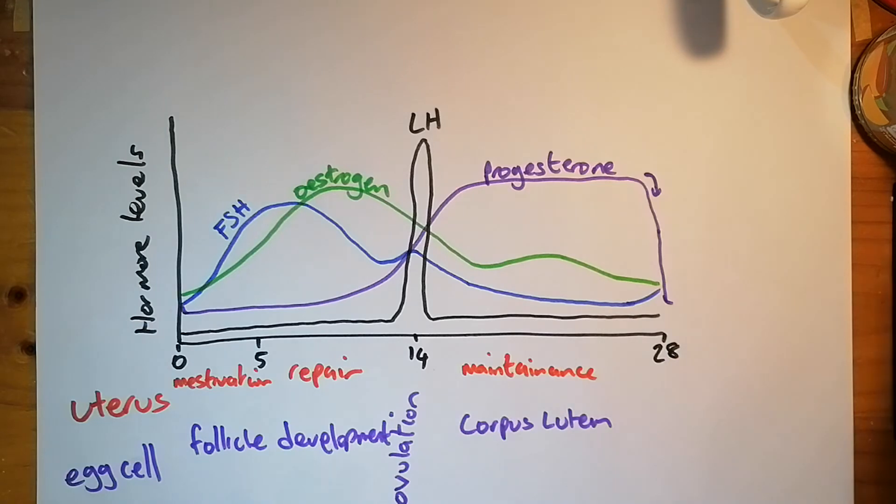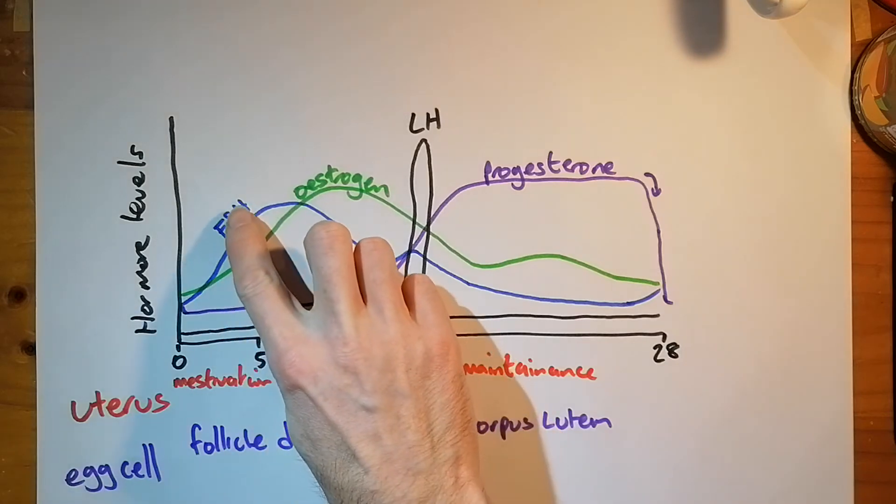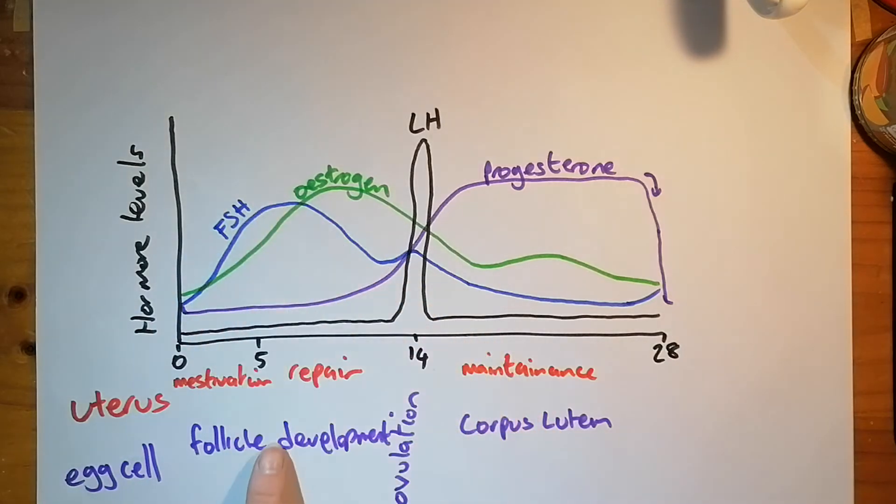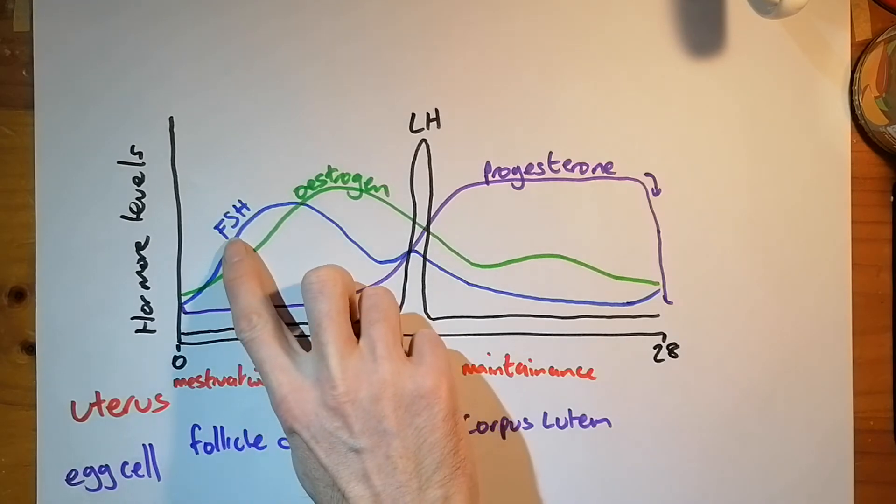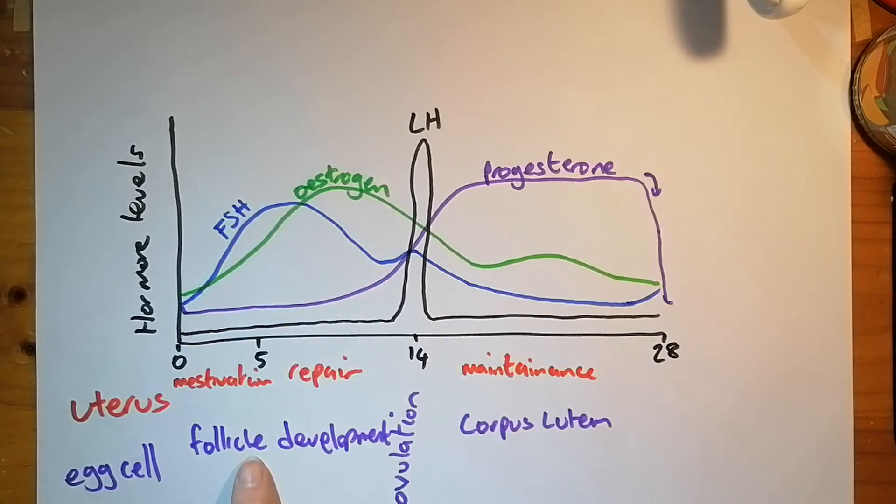So that is how the hormones work. And I hope you can see the point of this graph. If you've got the hormone levels and the events, you should be able to relate the hormone levels to the events. So FSH, the peak is here, causes follicle development. The clue is in the name - it's called follicle stimulating hormone. Causes follicle development.